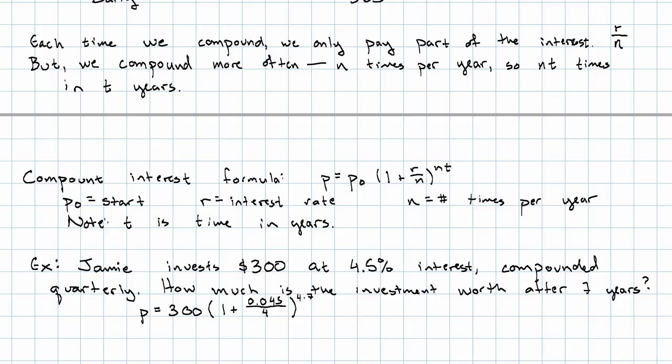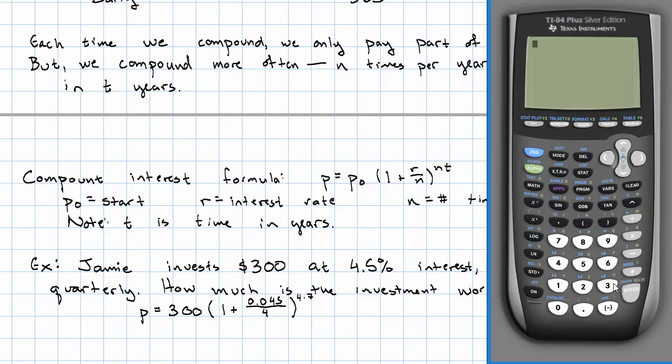How do we put this into our calculator? With lots of parentheses. So we'll say 300 times one plus, in parentheses, 0.045 over four. Close these parentheses. Close these parentheses. To the power, four times seven, also in parentheses. Rounding to the nearest cent, we get $410.36.